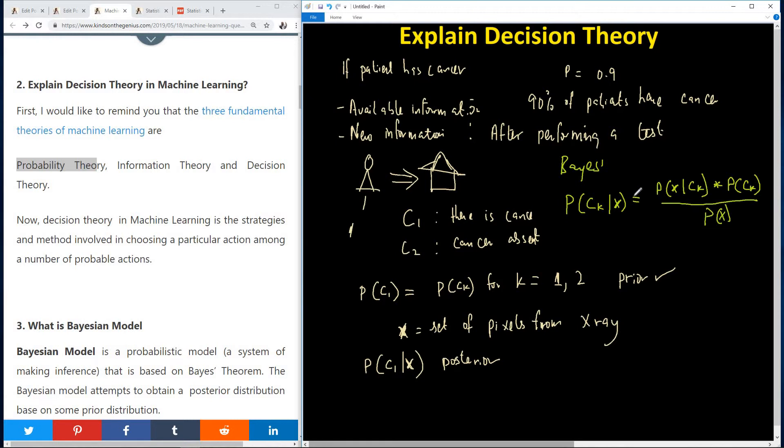So what you can figure out from here is that the probability of CK given X, this posterior probability that we mentioned, is equal to this function times the prior. The posterior probability is proportional to the prior probability. Now what is this term here? This term is called the likelihood. P of X given CK is called the likelihood.